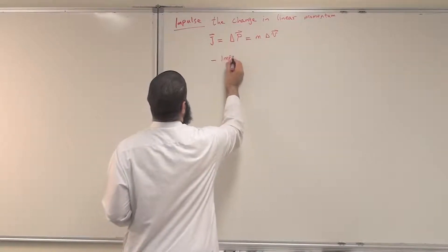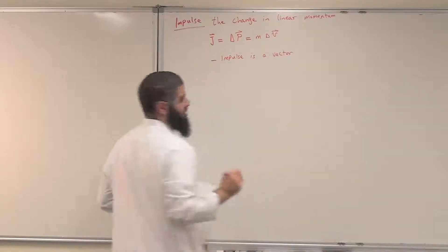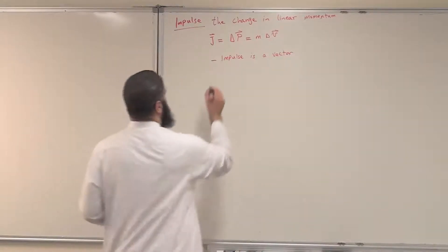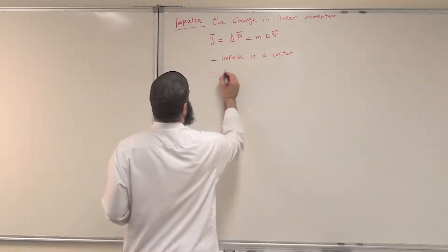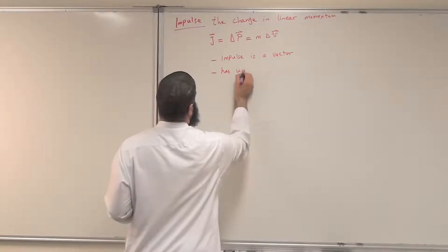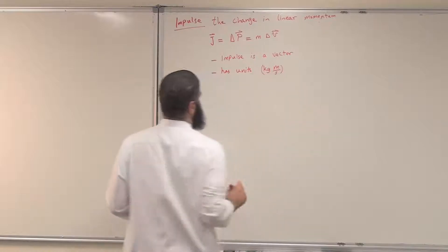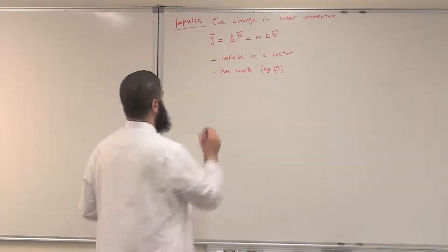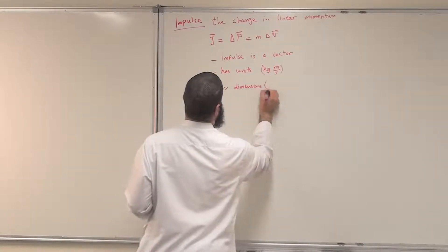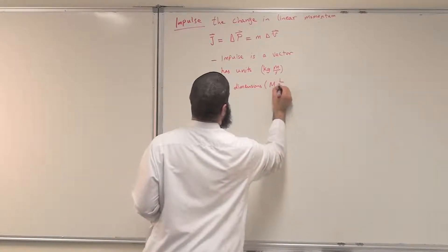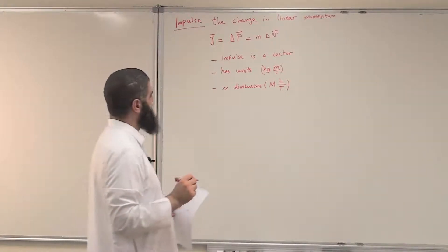Impulse is a vector, so when we deal with it, be careful — it is a vector quantity. It has the same units as the linear momentum: kilogram meter per second, and also the same dimensions as the linear momentum, which are mass times L over capital T.